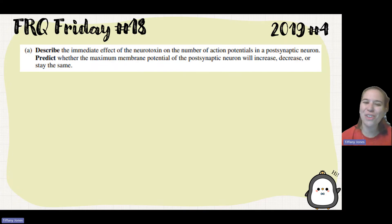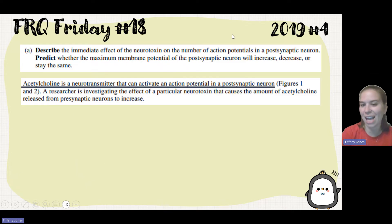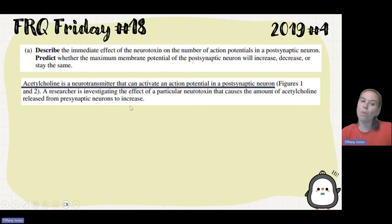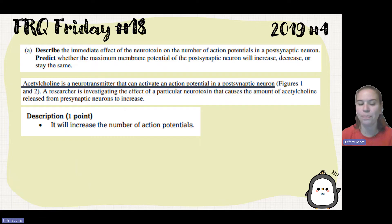Describe the immediate effect of the neurotoxin on the number of action potentials in the post-synaptic neuron. Acetylcholine is a neurotransmitter that activates the action potential, and the neurotoxin causes the amount of acetylcholine released to increase. So if there is more acetylcholine being released, that's going to cause an increase in the number of action potentials.